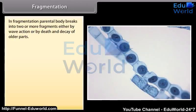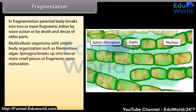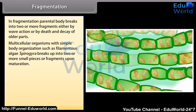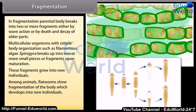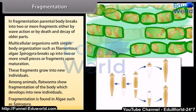In fragmentation, the parental body breaks into two or more fragments either by way of natural action or by death or decay of older parts. Multicellular organisms with simple body organization, such as filamentous algae like Spirogyra, break up into two or more small fragments upon maturation. These fragments grow into new individuals. Among animals, flatworms show fragmentation of the body, which develops into new individuals.